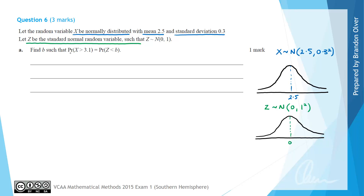Going back to our question, we want the probability that X is greater than 3.1. Using our standard deviation, the next value would be 2.8 and then 3.1. The probability that X is greater than 3.1 is that shaded region. We need a value of B so that the area under the Z curve less than B is equivalent to that region. Going two standard deviations in the negative direction gives negative 1 and then negative 2, so B equals negative 2.